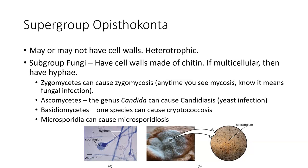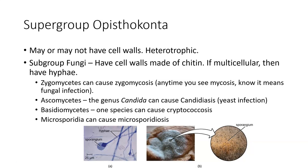The Microsporidia are actually obligate intracellular parasites, so you need a microscope to see them — they're always going to be really small and living inside of cells. The animal group is where our worms are going to be. We're really just going to spend some time talking about some of the pathogenic worms.